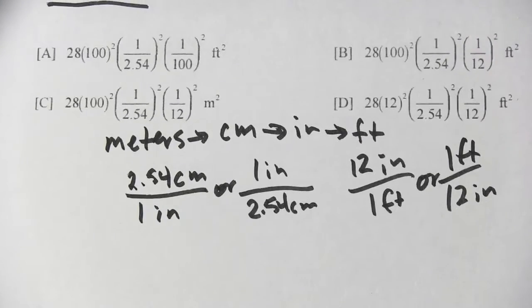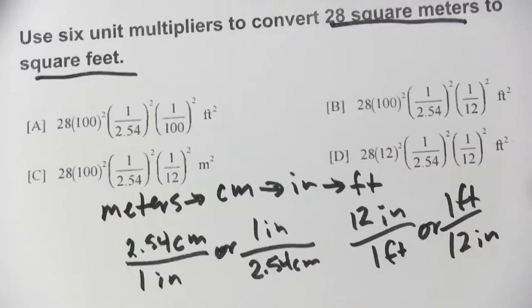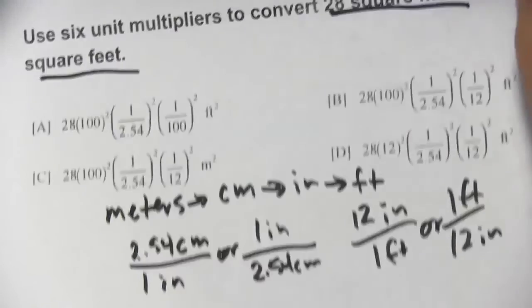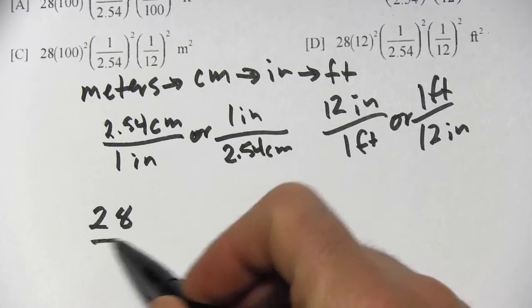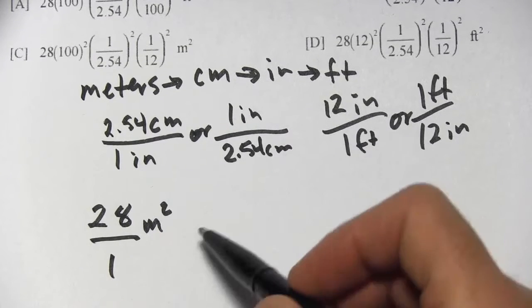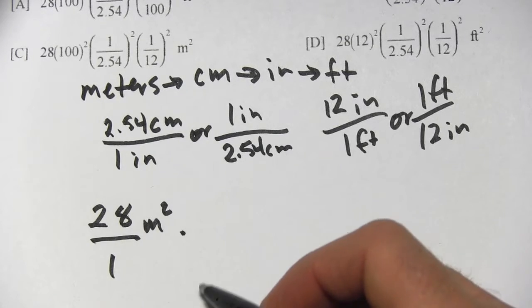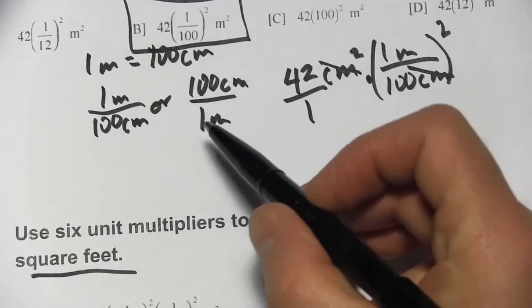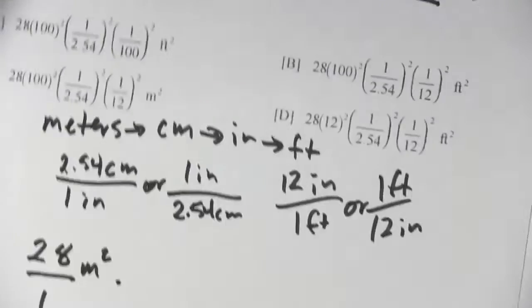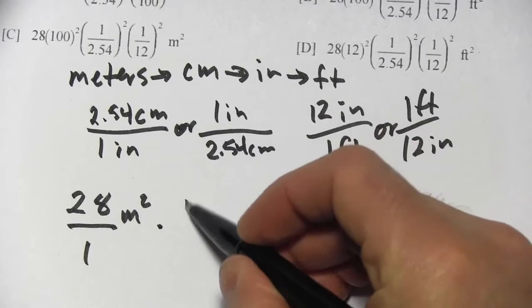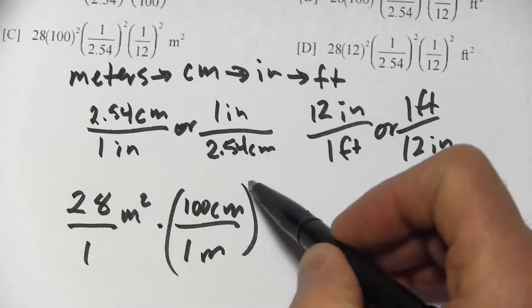Let's see if we can arrange the problem correctly. So we're starting with 28 square meters. So let's write that as 28 over 1. And the units are meters squared. Now since we've got meters on top, we want to choose the conversion factor that has meters on the bottom. So that's this one right here. So 100 centimeters on top, 1 meter on the bottom. And then this whole thing gets squared.